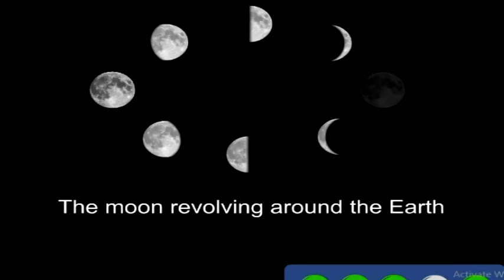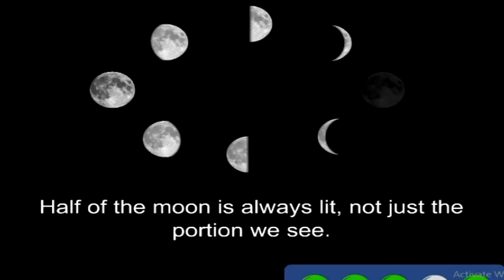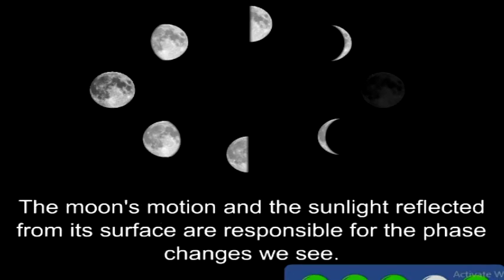One, the moon revolving around the Earth. And two, the moon reflecting sunlight towards the Earth. Half of the moon is always lit, not just the portion we see. However, sometimes we only see a profile of the lit portion of the moon. The moon's motion and the sunlight reflected from its surface are responsible for the phase changes we see.